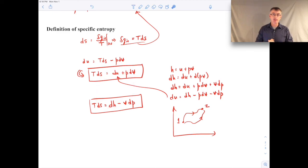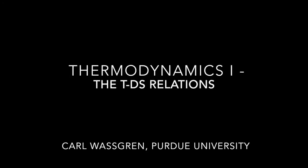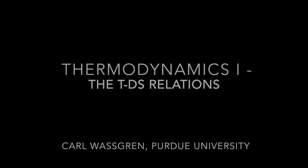I think we're going to go ahead and end this video lecture here. What we'll do in the next one is we'll make use of these, the next video and then the one after that, we'll make use of these Tds equations to derive changes in specific entropy for an incompressible substance as well as an ideal gas.